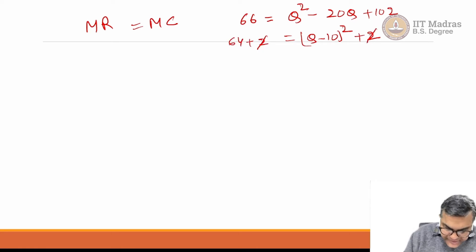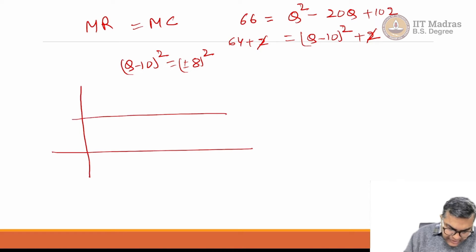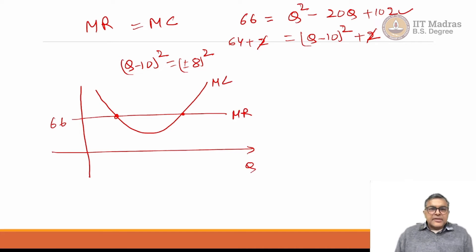What we have is basically (q minus 10)² equals plus minus 8². How will it look like? If you draw it, this is MR, everywhere it is same, everywhere it is 66, and this expression will look like something like this. It cuts the MR curve at two different points. This is the MC and this is MR. Which one should the firm produce? This one or this one?